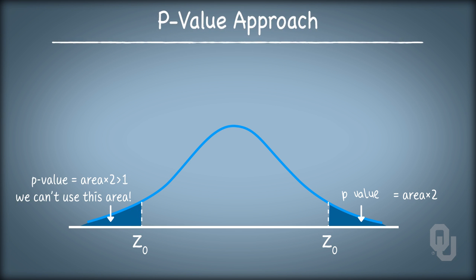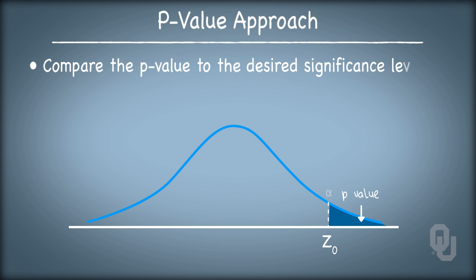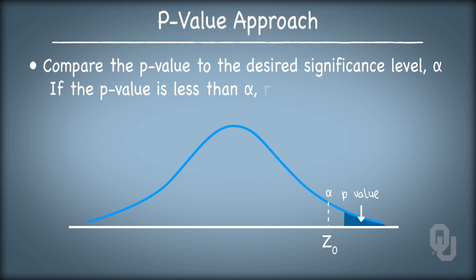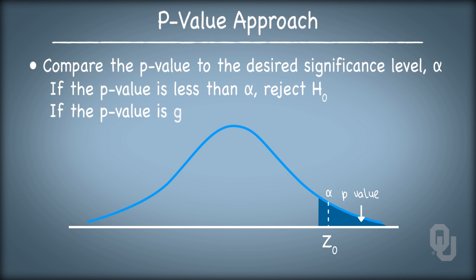In the fifth step, we compare the p-value to the desired significance level. You can imagine that if the p-value is small — that is, the area of the tail associated with the test statistic is small — then the test statistic would probably fall in the rejection region. That's the idea behind the p-value: we eliminate the need to determine alpha in advance. We just find the area in the tail associated with the test statistic and compare it to alpha. If it's bigger than alpha, then the test statistic wouldn't lie in the rejection region.